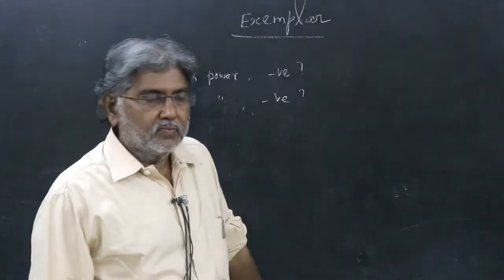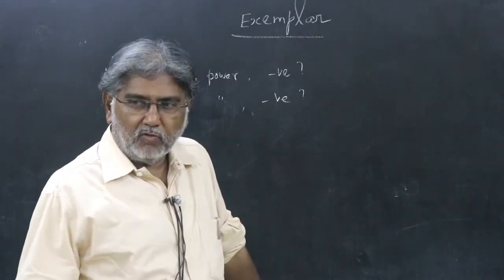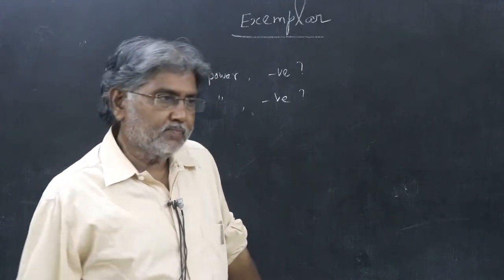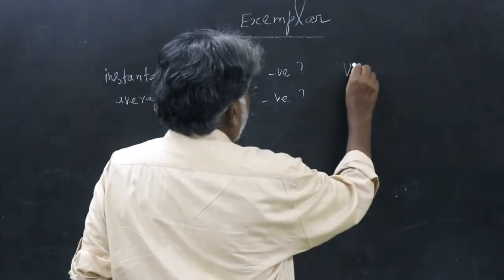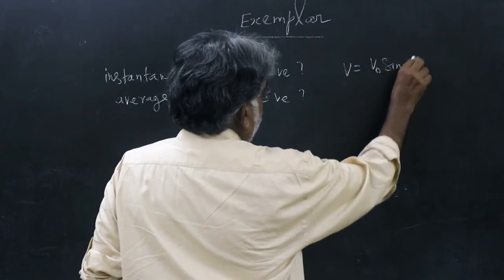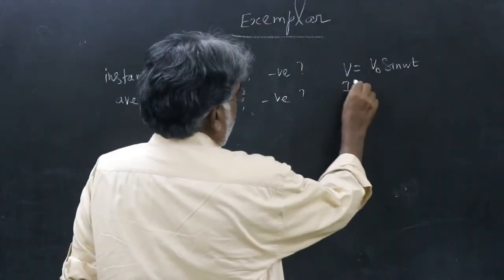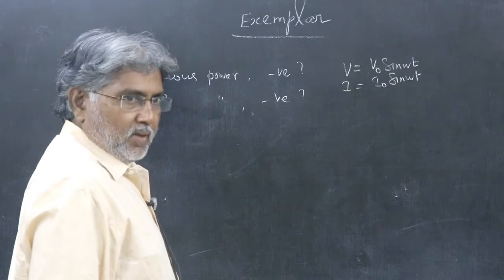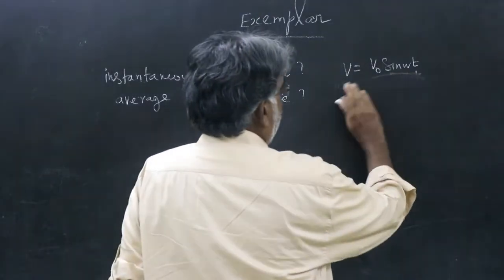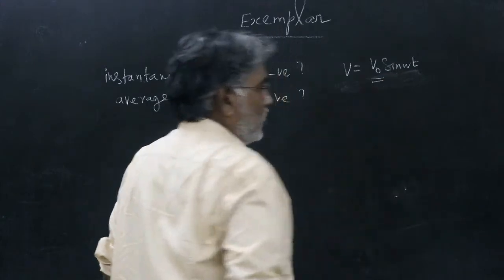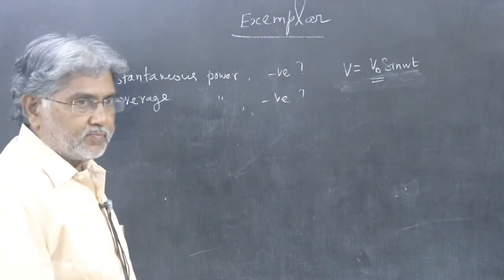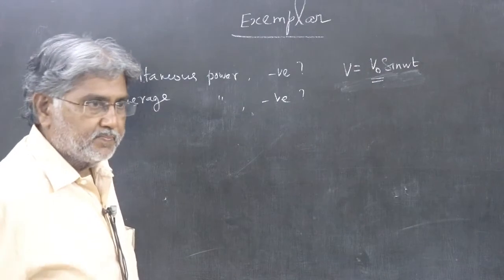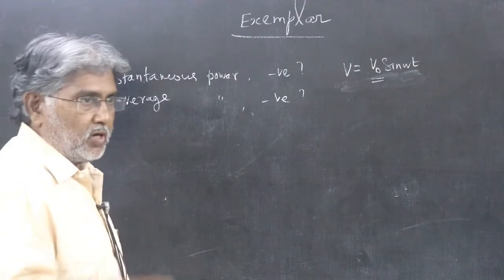Let us see how to proceed. For that you should know a little bit of waveform diagrams in the alternating current chapter, and also you should know some expressions. If you have V as V₀sinωt, we will take the simplest case. You cannot straight away write I = I₀sinωt unless there is only a resistor in the circuit. If there is an inductor or capacitor, a phase difference will come into the expressions.